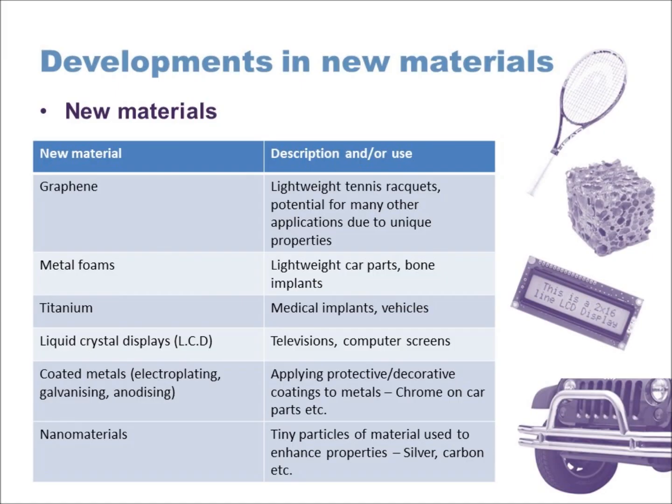One example of a new material you should be aware of is graphene. Graphene is very new as a material — it's effectively a wafer-thin layer of carbon that's only been developed very recently. They're still looking for applications for how this material can be used, but it is a very strong and very lightweight material.